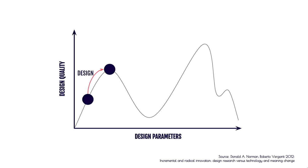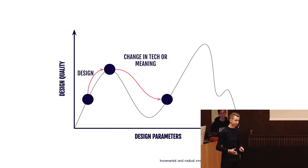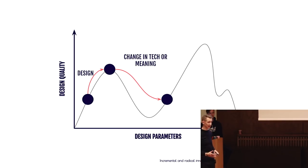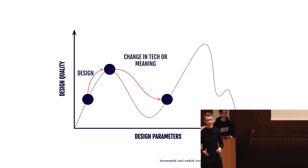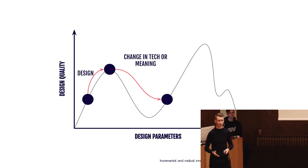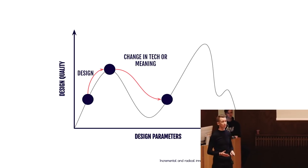We cannot go any other direction without the product or service becoming worse — we've reached the local optimum. Design is really good at climbing this hill, making small tweaks and little by little getting higher. But what design is not good for — and there's a lot of empirical evidence — is finding a new mountain, a higher peak. For that we need radical innovation, a radical shift in meanings or technology. This happens really rarely, maybe once every five to ten years within an industry, and most attempts miserably fail — some estimates say as high as 96%.